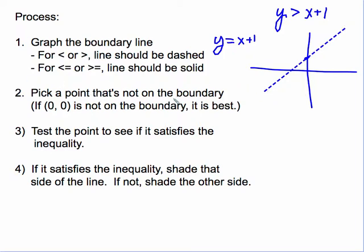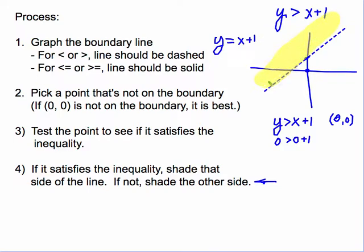Next, we pick a point that's not on the boundary line — in this case we could use (0, 0) — and test it to see if it satisfies the inequality. We take y is greater than x plus 1 and test (0, 0): 0 is greater than 0 plus 1. The test fails, so we shade the other side of the line. If the test point did satisfy the inequality, we would shade the side that the point is on. That's the process — I hope that helps.